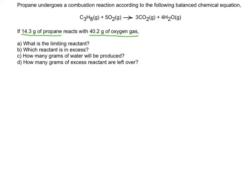If you want to refresh on stoichiometry, just click the link you see in the video here. In a normal stoichiometry problem, we're used to just getting one quantity. In this case, I have two. And so what I have to do is figure out which one — the oxygen or the propane — is going to be the limiting reactant.